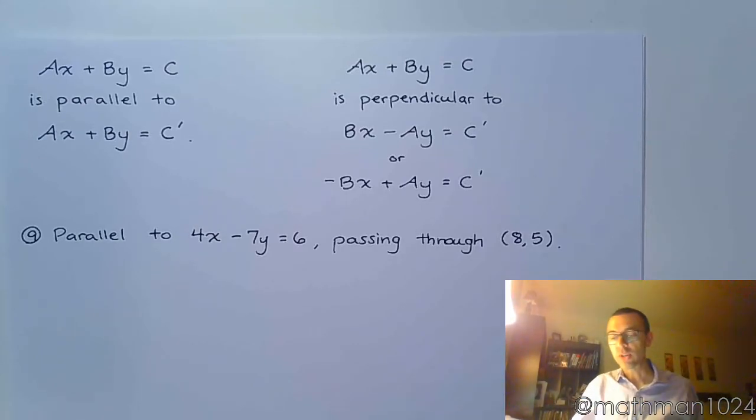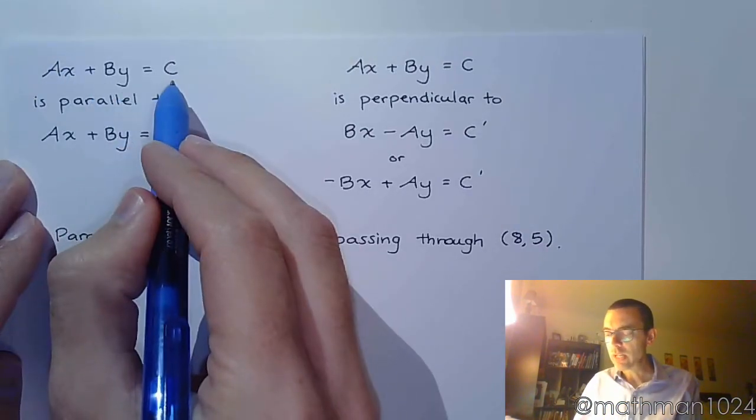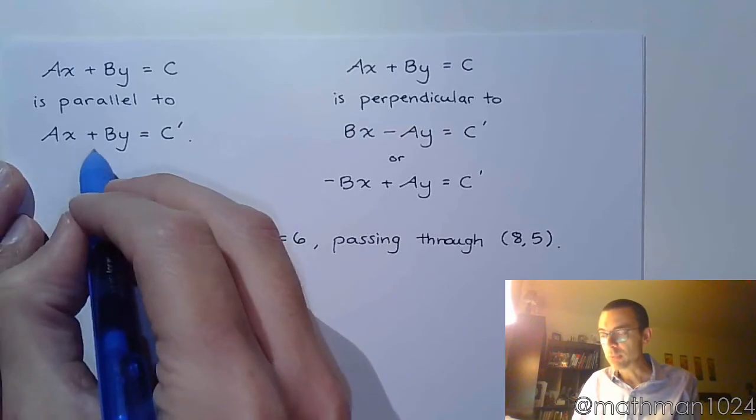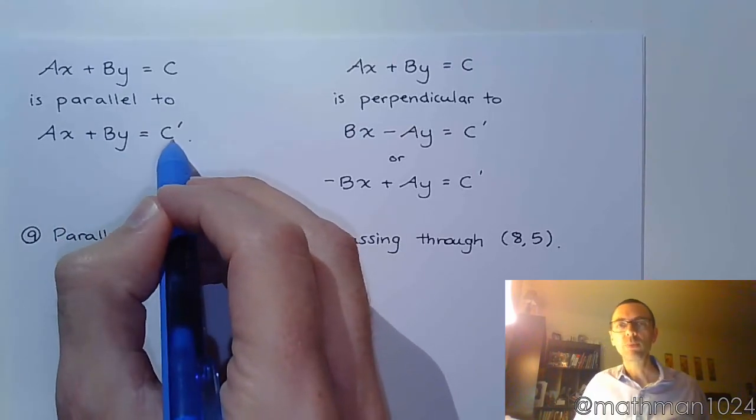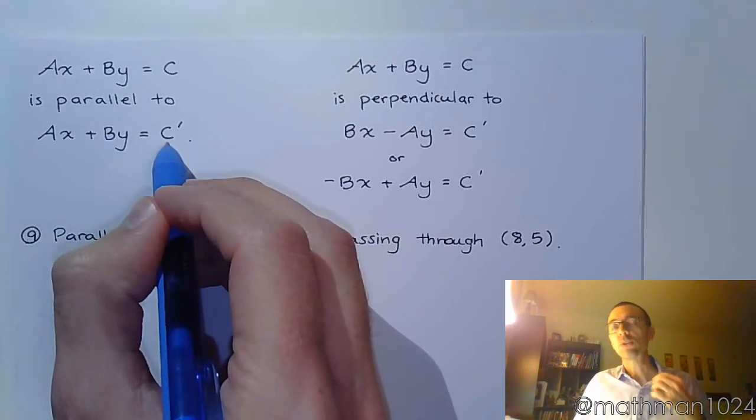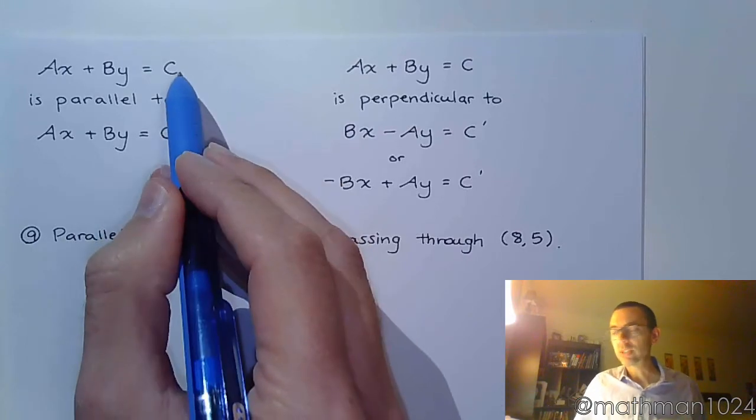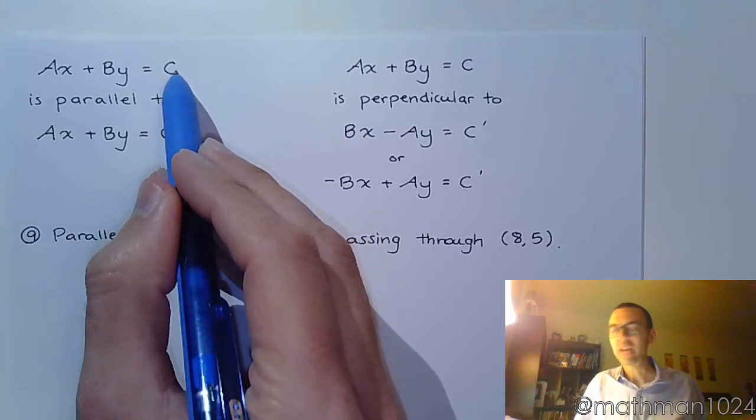All right, so let's make it easy. When you have something that's in standard form, it's easiest to work with it in standard form, because Ax plus By equals C is going to be parallel to Ax plus By equals C prime. So we use that apostrophe, it's called prime in math. That means it's just a little bit different from this guy. Some kind of change has been made.